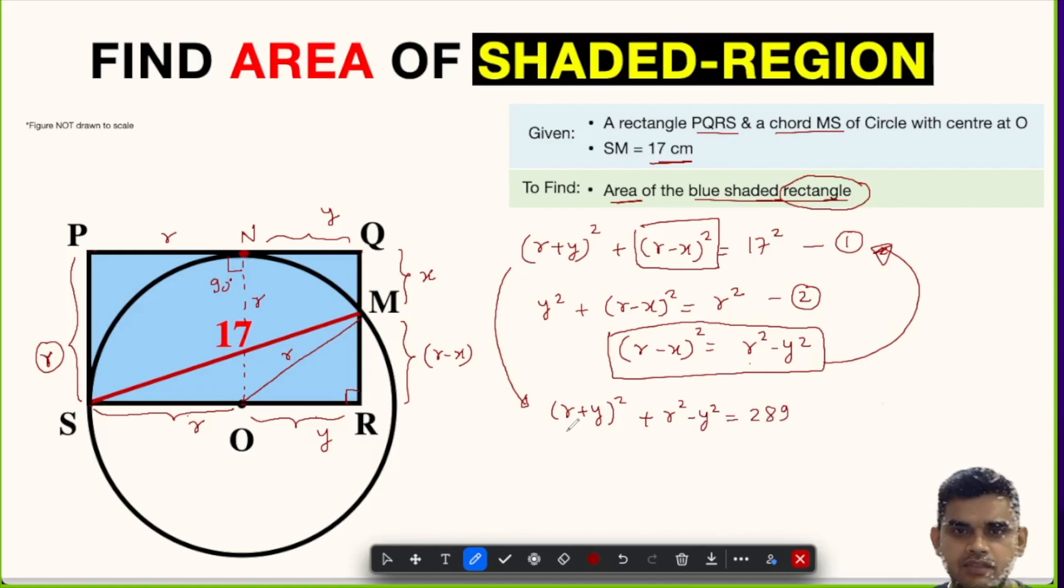Now let us expand this. So this will give us R² + Y² + 2RY, and outside we have R² - Y² = 289. So Y² and -Y² gets cancelled. R² + R² is 2R² + 2RY = 289.